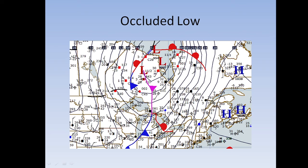You can have two different types of occlusions. You can have a cold occlusion, where the occlusion runs right into the cold front. You can also have a warm occlusion, where the triple point runs right into the warm front. This example here is a cold occlusion, with the warm front kind of dropping down — it looks like a little cold air damming going on with high pressure to the east, where slightly colder air prevents the warmer air ahead of the warm front from pushing it out. But that's an occluded low.